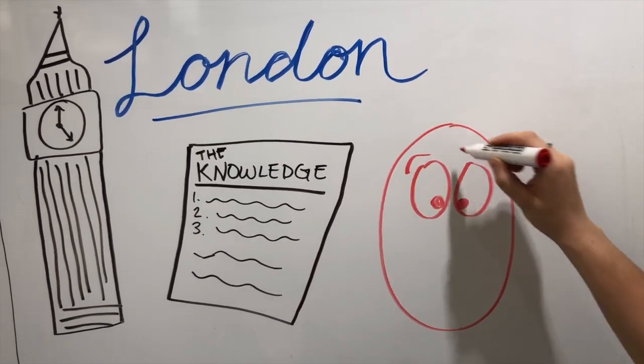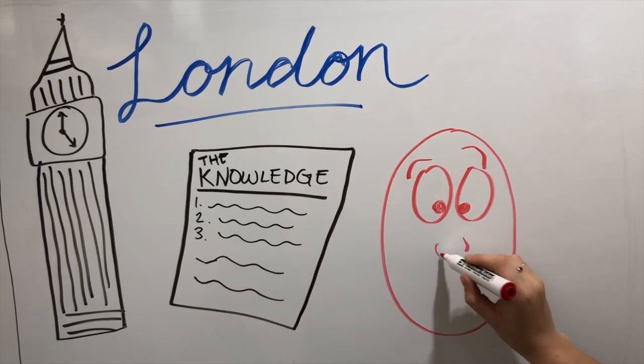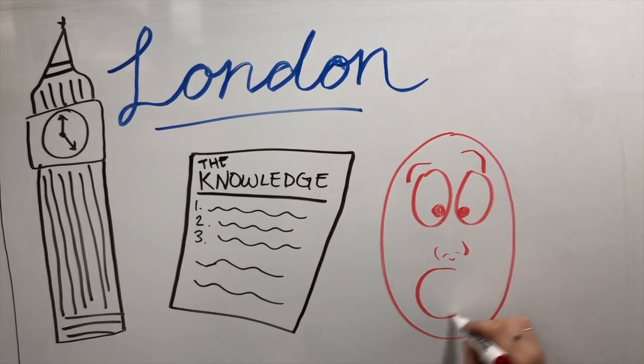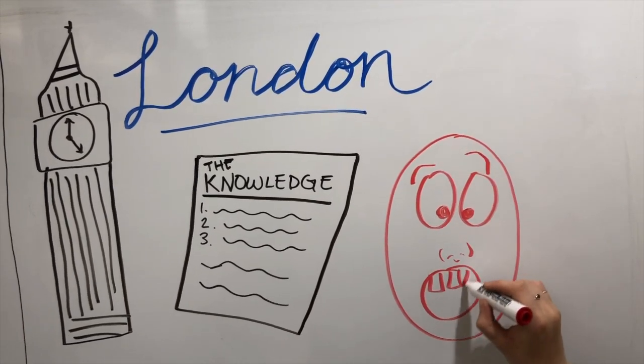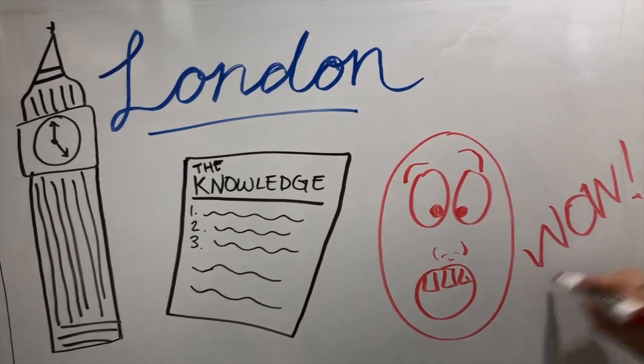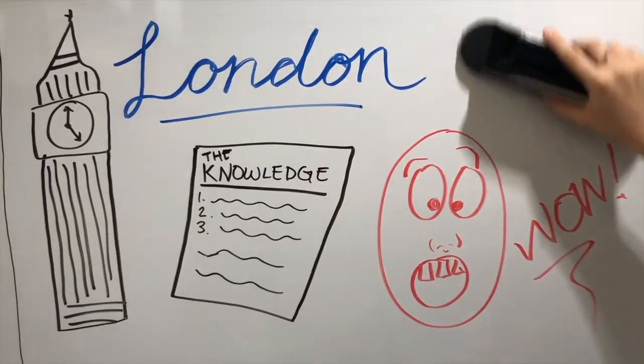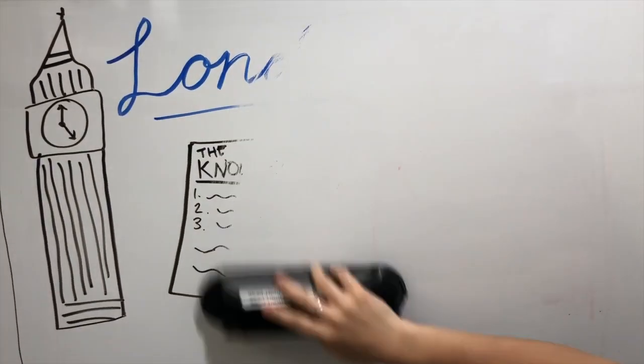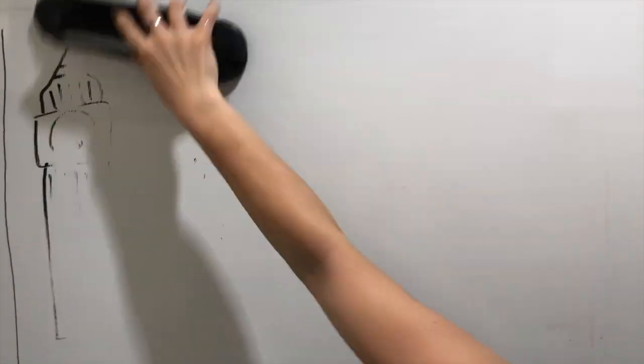It takes the average person between two to four years to memorize all of this information, and the brain undergoes incredible changes during this time of intense spatial memory training. This shows how the human brain has a remarkable capacity to acquire and use spatial knowledge to navigate through a large city.